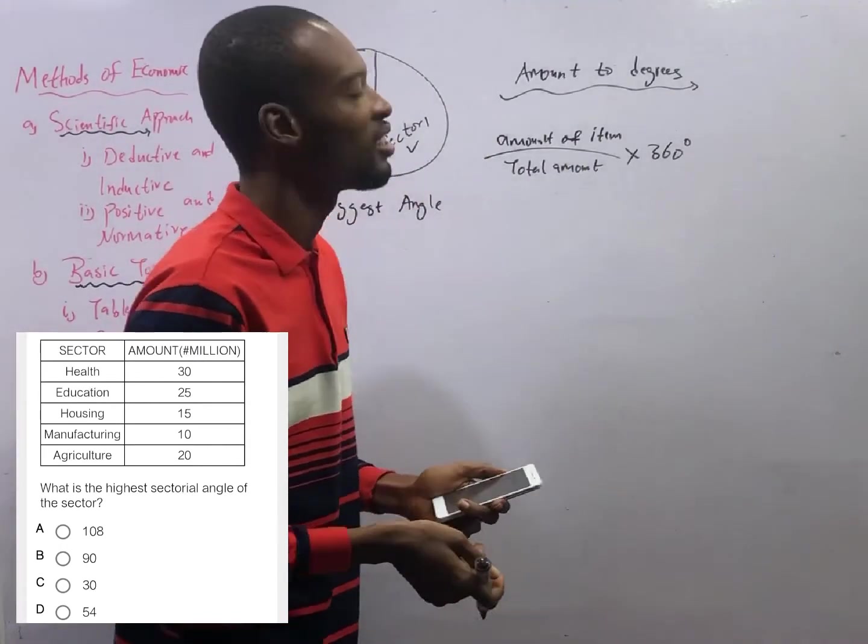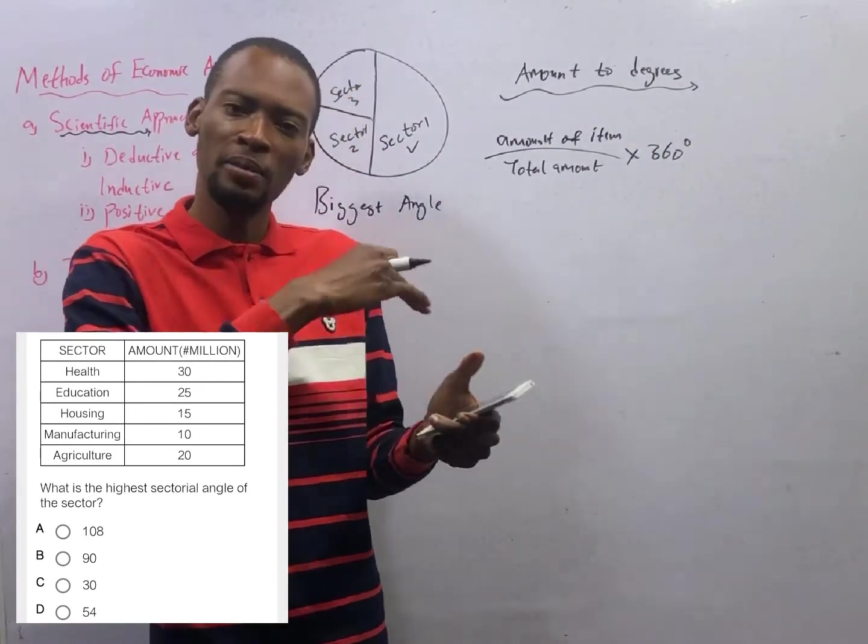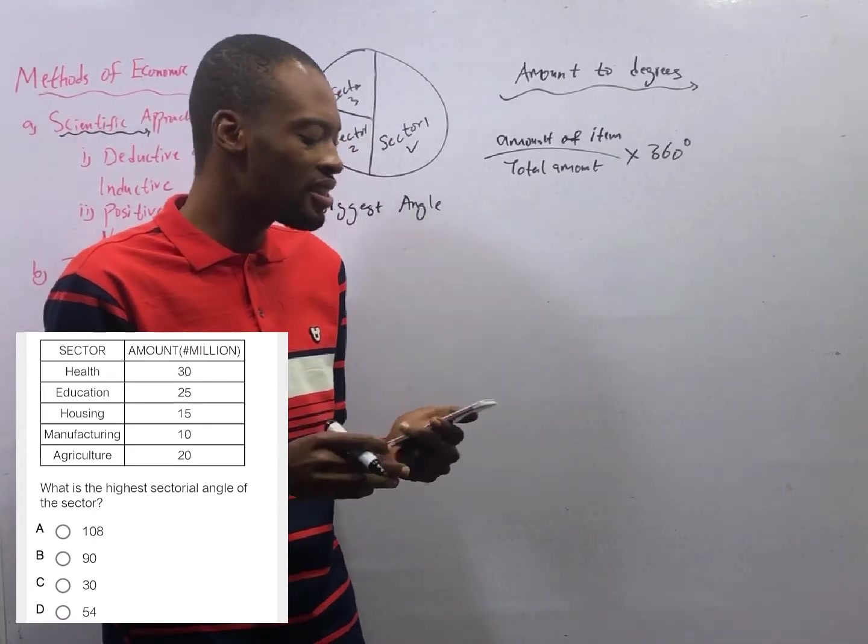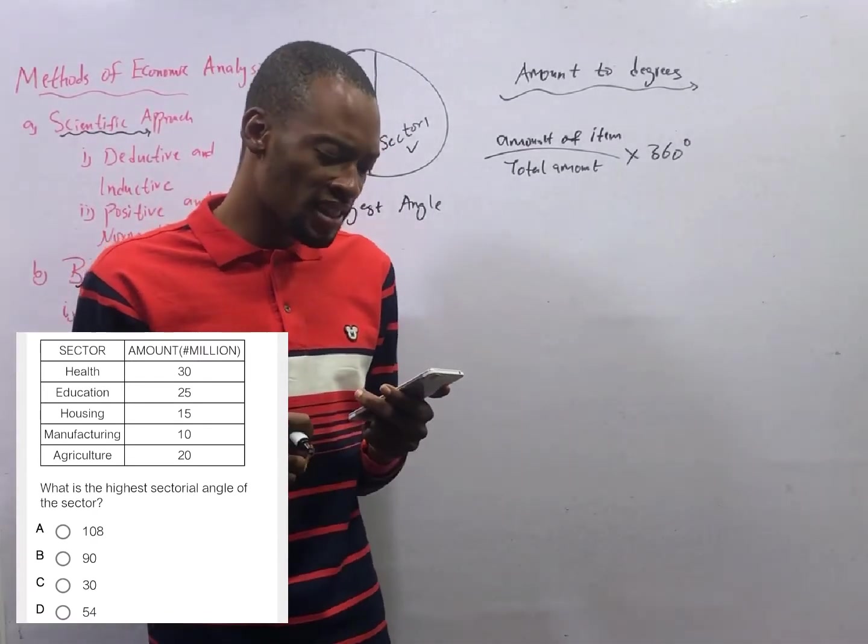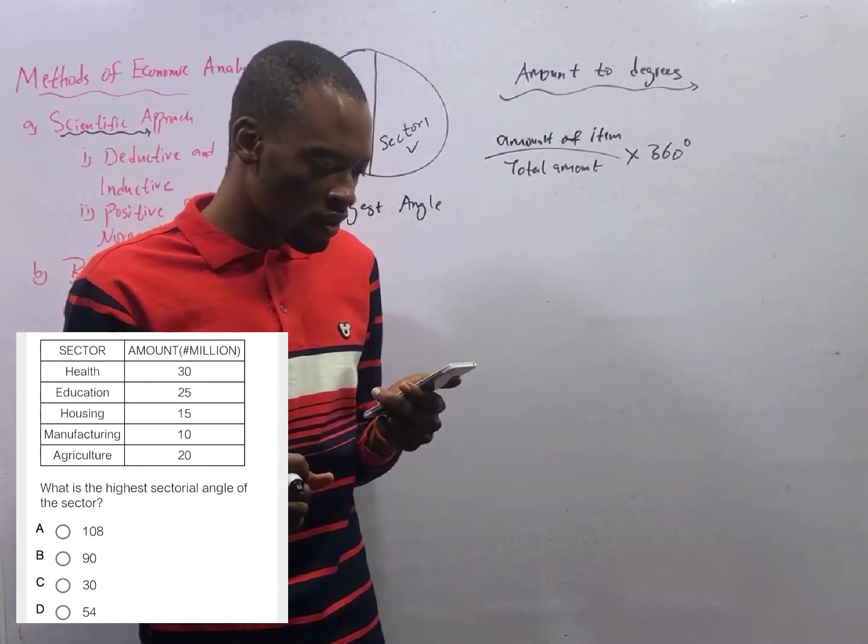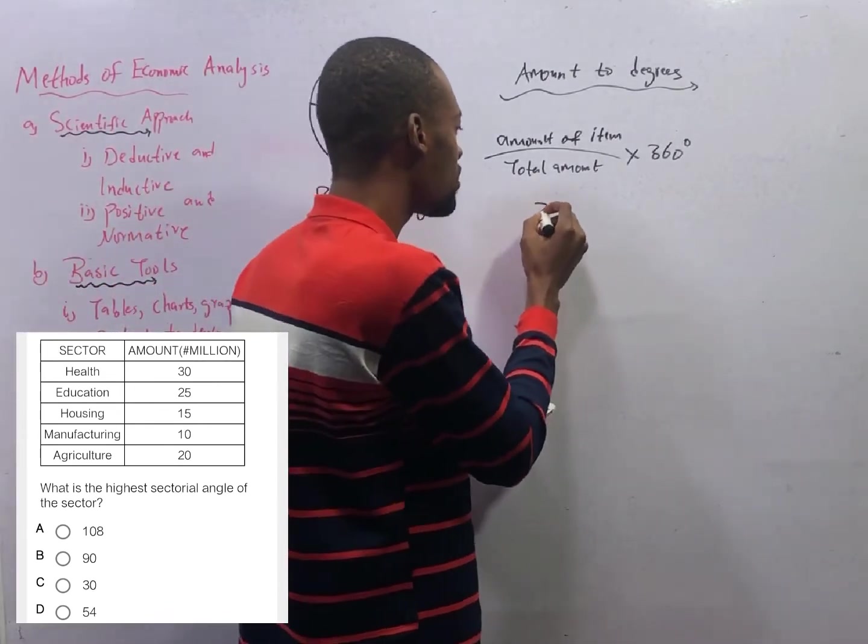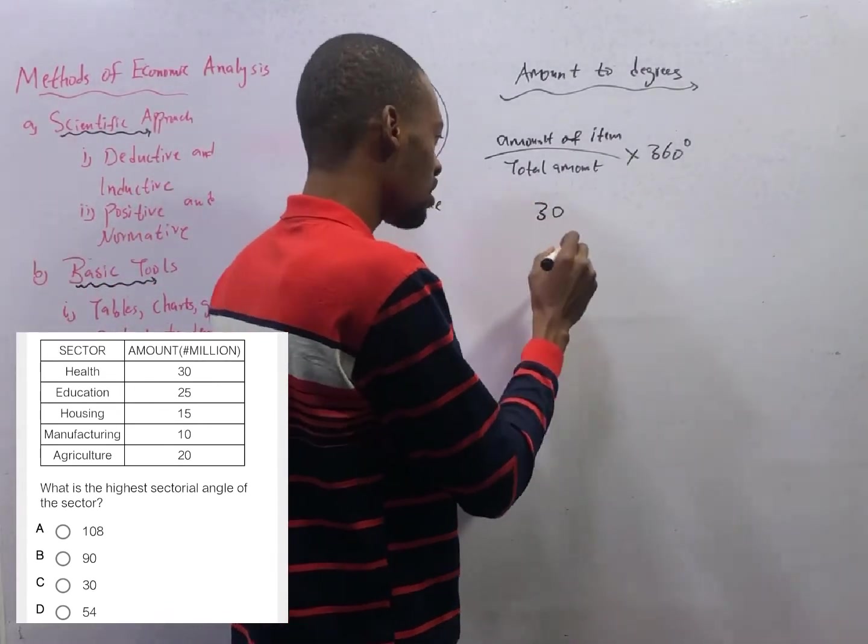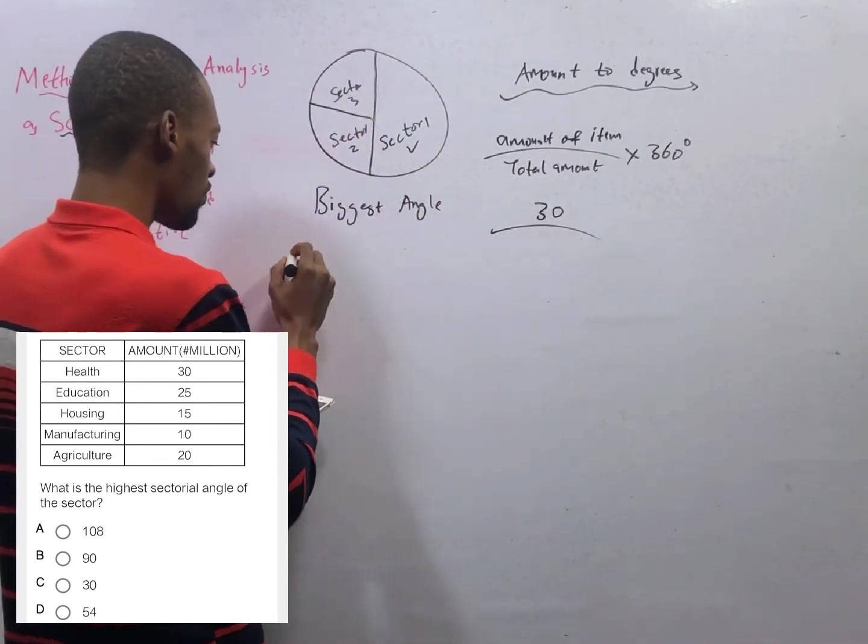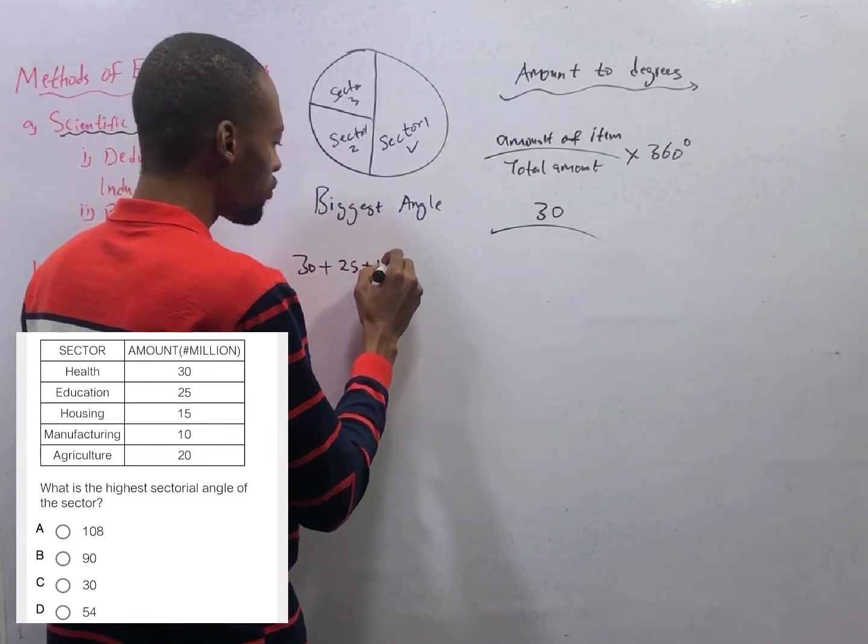To convert amounts to degrees for a particular item, we use amount of item over total amount times 360 degrees. To convert to degrees you must multiply by 360 degrees. If you are converting percentage to degrees, the particular percent of the item over the total percentage, which is 100, times 360 degrees.